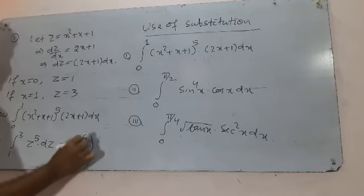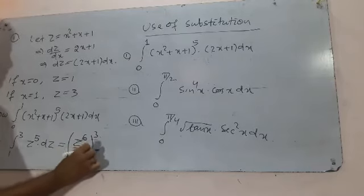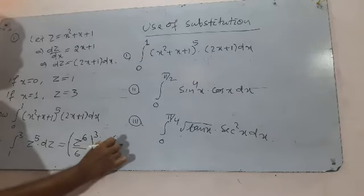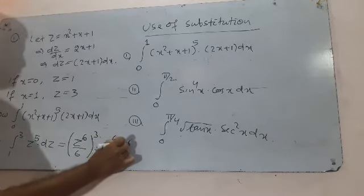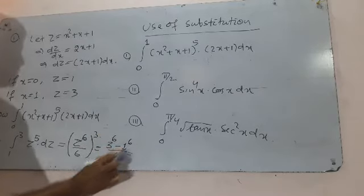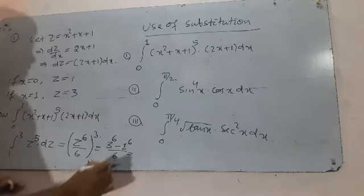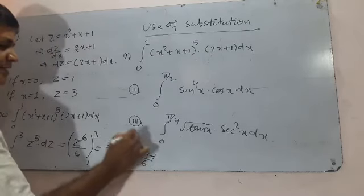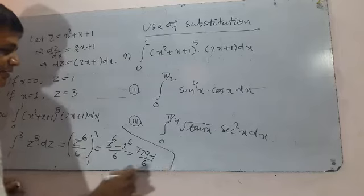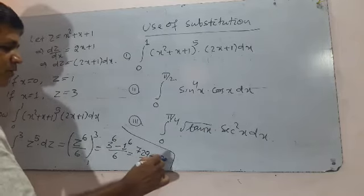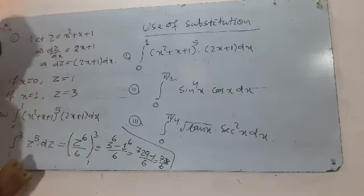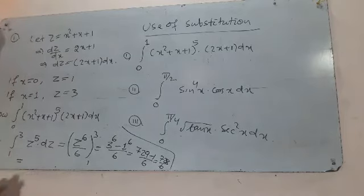The integral of z⁵ is z⁶/6, evaluated from 1 to 3. We put the upper value: 3⁶ minus 1⁶, divided by 6, which is 729 minus 1 over 6, giving 728/6. After simplification by canceling with 2, the value is 364/3.